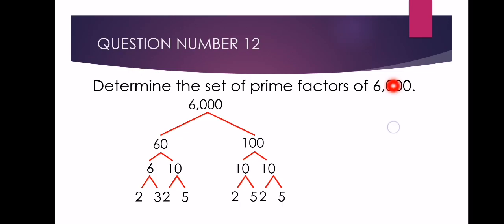Si 2, 3, 2, 5, 2, 5, 2, 5 are already prime factors of 6,000.